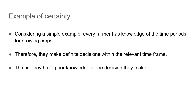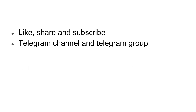Consider a simple example of a farmer. Every farmer has knowledge about the time periods for growing crops. As a result, they make definite decisions within the relevant time period — they have prior knowledge of the decision they have already made and will be using that information.